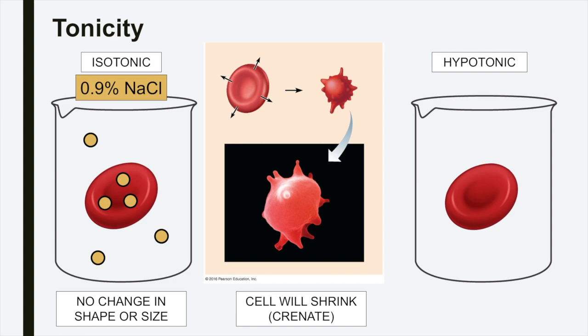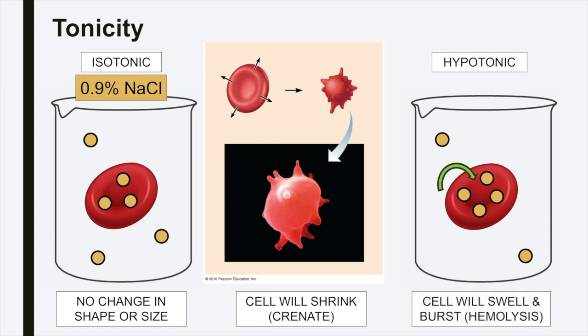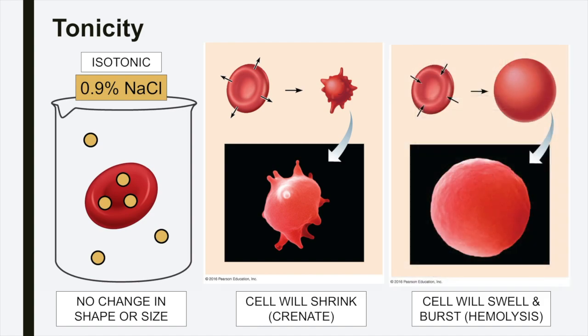In a hypotonic solution, the concentration of solutes outside the cell is less than the concentration of solutes inside the cell. If we place a red blood cell into a hypotonic solution, water will flow down its concentration gradient and rush into the cell. As water rushes into the cell, the red blood cell will swell, and in some cases the red blood cell will burst. This phenomenon is called hemolysis.